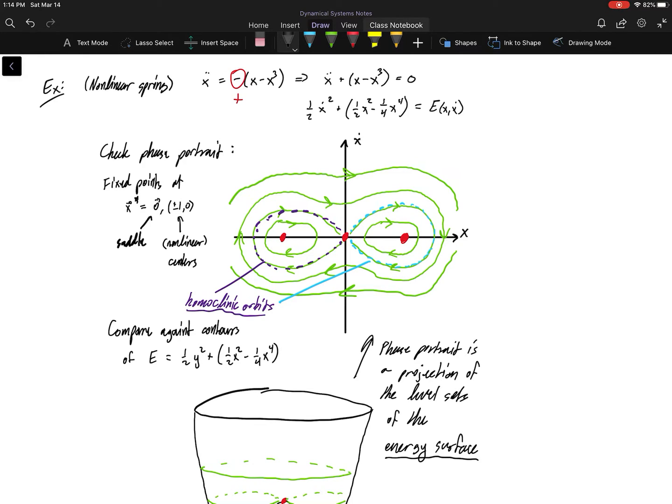We can identify them at the origin and at the locations plus or minus 1 comma 0. And we can go ahead and classify them. The origin we can see is a saddle. And if we take a look at the Jacobian for the plus or minus 1 points, we actually find linear centers. So our linear stability analysis can't actually be trusted because those are non-hyperbolic fixed points.